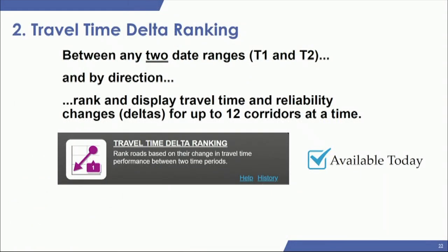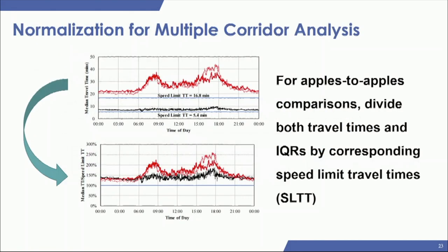The second tool is the travel time delta ranking. So far we've mostly been talking about one corridor. Our tool can handle up to 12 corridors, but some modifications need to be made to the methodology. It comes down to normalization: if you have two corridors with different speed limit travel times due to different lengths, the charts are on different scales and no real conclusions can be drawn.